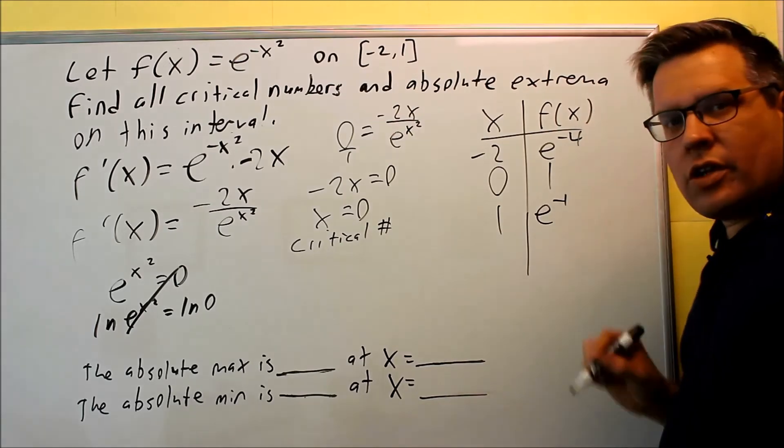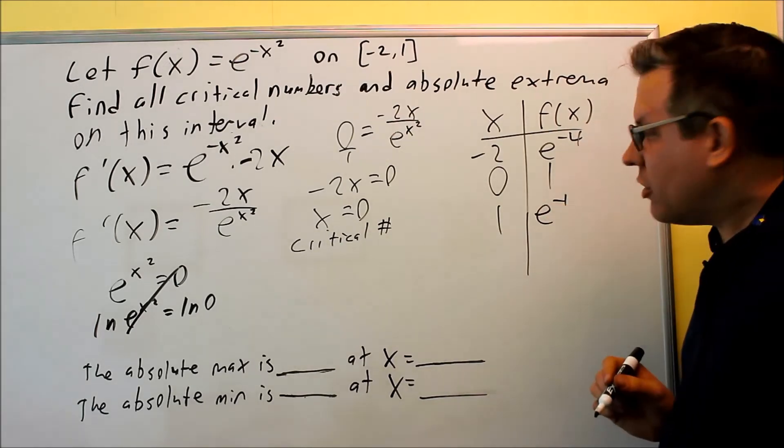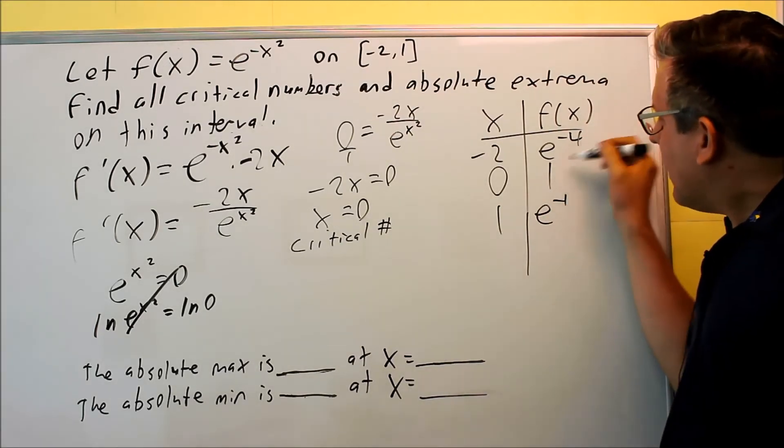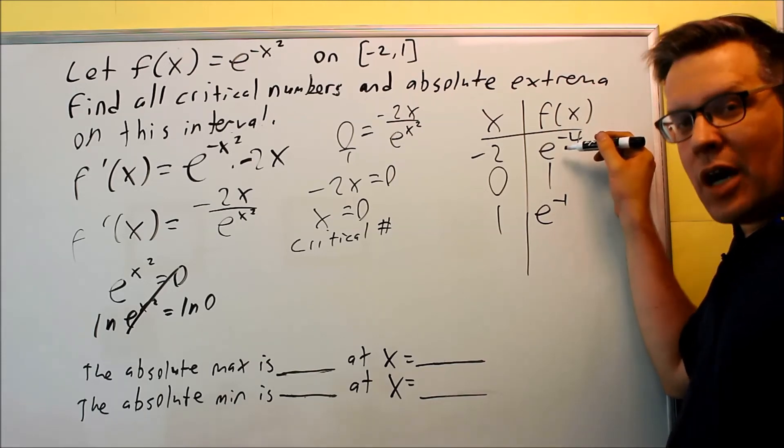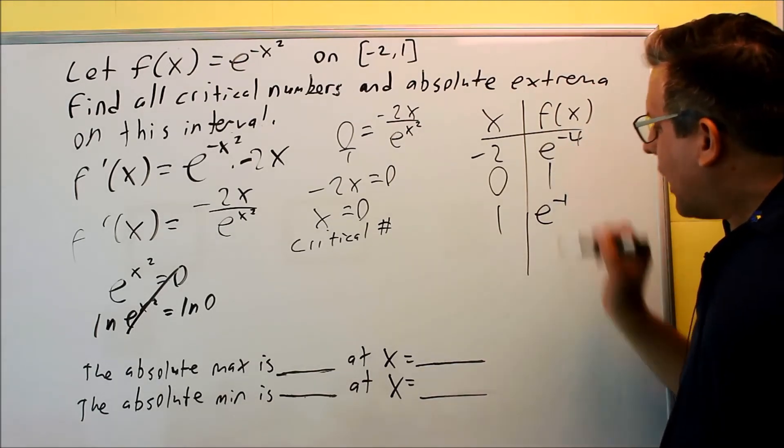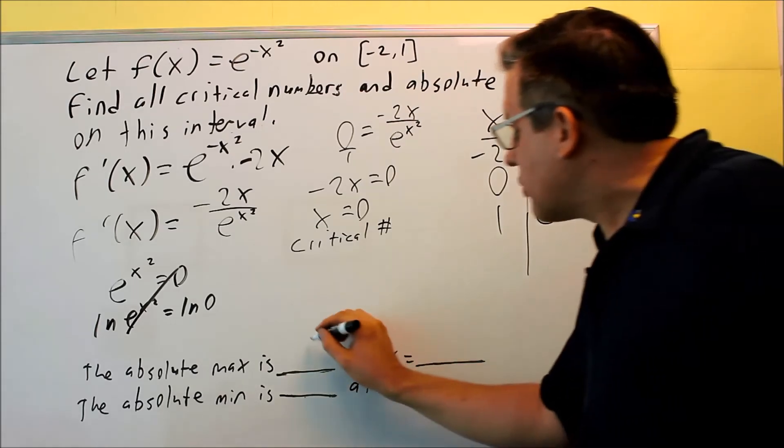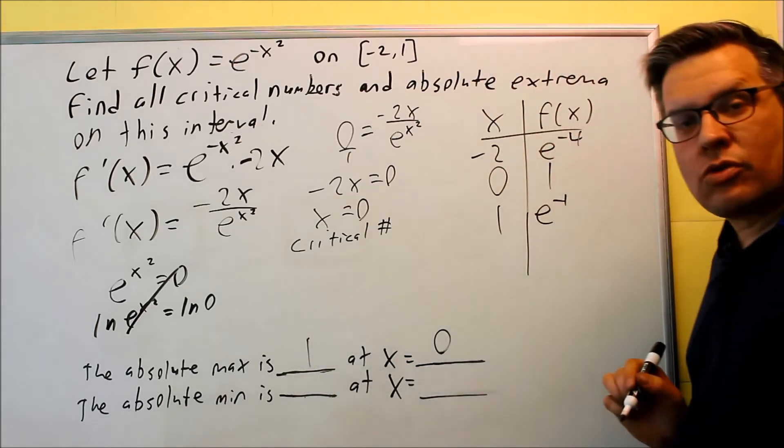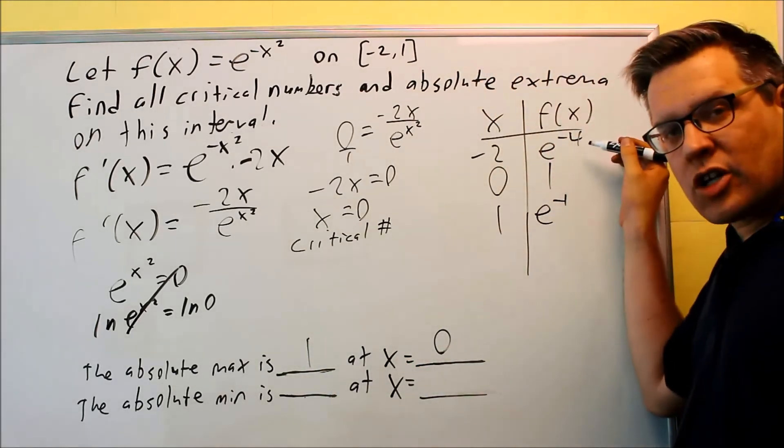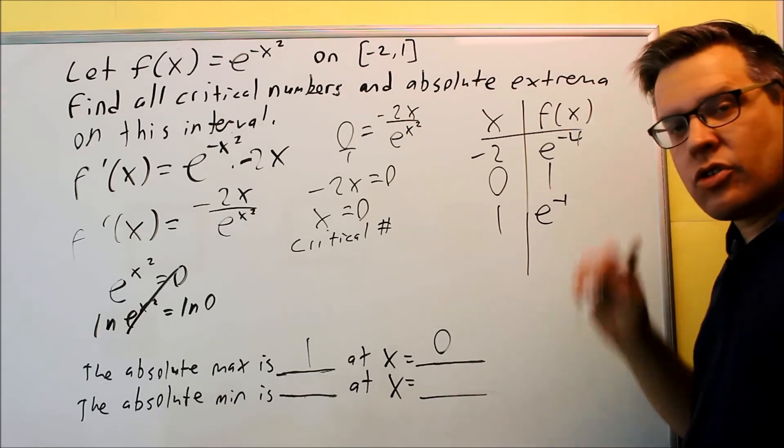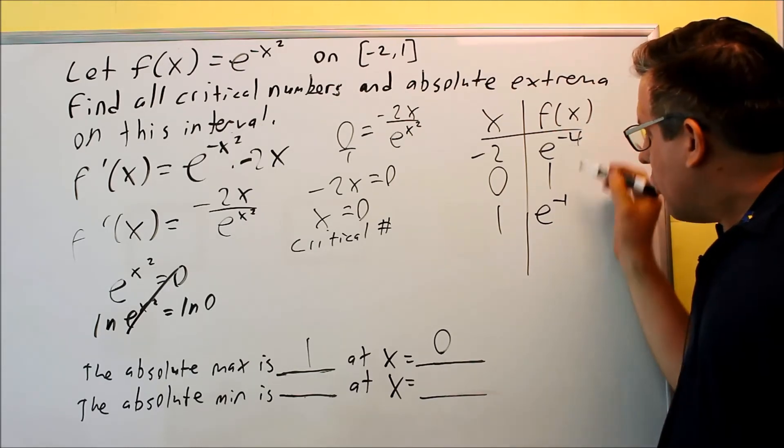So the question is now, which one of these is going to be the highest value, which one's going to be the smallest value? Well, these here are going to involve 1 divided by something, which means that this one's going to have to be the largest one. So the absolute max is 1, that's going to occur at x is equal to 0. So again, if you want to do decimals, you can, but you could also use exact values if you wanted to for this particular one.